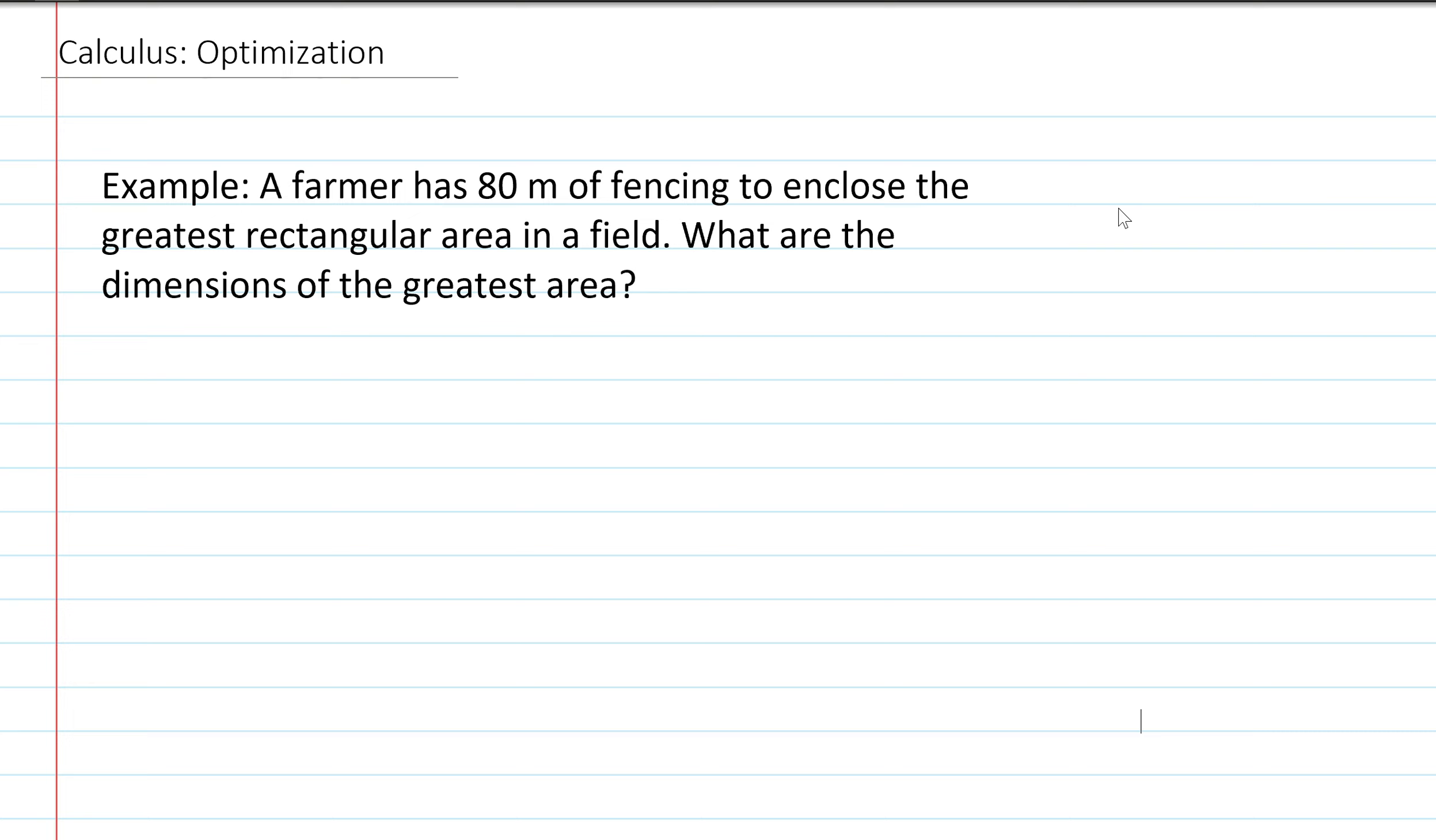You'll have to understand and be able to take the derivative and then set it equal to zero. When we're going through the process of optimization, the function in question is not really explicitly given, so you're going to have to come up with it and build it. In each context, there's always going to be a variable, one variable that you have to optimize, and then there will be another variable that will be subject to a constraint.